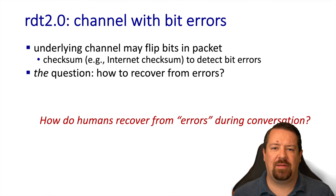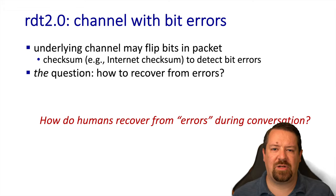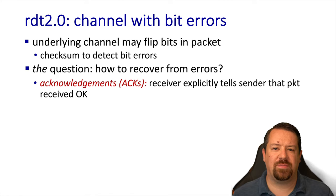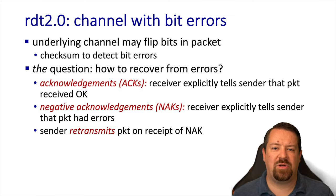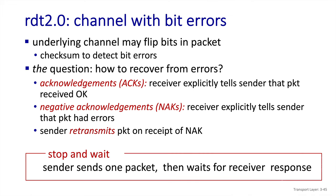Now we're ready for version 2. In this version, the transport layer is going to assume that the underlying network layer may introduce errors into packets, but it won't lose or reorder them. We've already talked about the internet checksum and how we can use that to detect errors — assuming that all errors will be detected by the checksum. When the receiver detects an error, we're introducing acknowledgements. Our receiver will explicitly send a message back to the sender each time it receives a packet that passes the checksum. We're also introducing the negative acknowledgement, where the receiver can explicitly tell the sender that a packet was received but had errors. When the sender receives one of these NAKs, it will retransmit the last packet. Overall, this is a stop-and-wait protocol — each time the sender transmits a packet, it waits for an acknowledgement before transmitting the next packet.